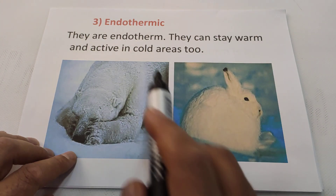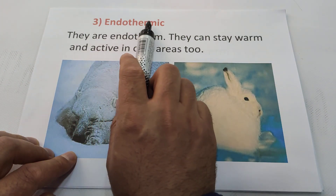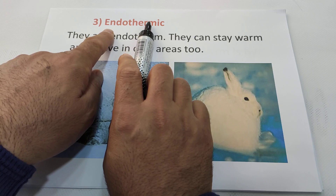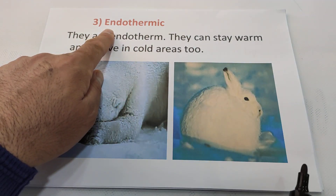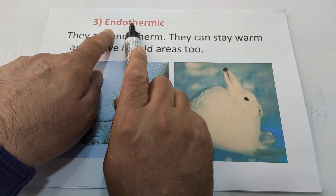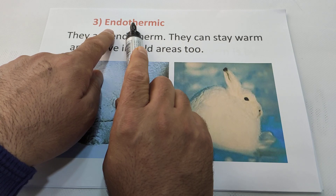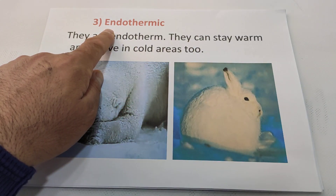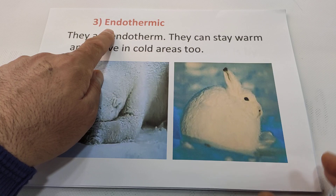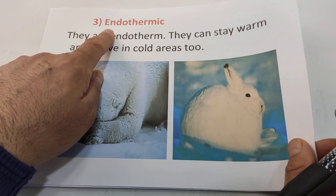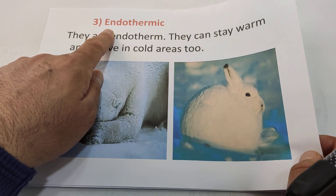The third characteristic of mammals is that they are endothermic. Remember endothermic and exothermic. Endothermic animals have a constant body temperature. Exothermic animals have a body temperature that is not constant — it changes according to the environment.